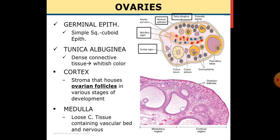In oogenesis, the reproductive organ involved is the ovaries. If we look at the structure of the ovaries, it has germinal epithelium, tunica albuginea, cortex, and medulla. The germinal epithelium is the outer lining made of simple cuboidal epithelium — these are the germinal cells where meiotic division starts. Tunica albuginea is dense connective tissue of whitish color. The cortex is the stroma where follicles at different developing stages can be seen in the ovary. The medulla is the central loose connective tissue containing blood circulatory and nervous system connectivity.